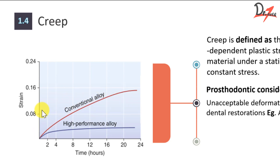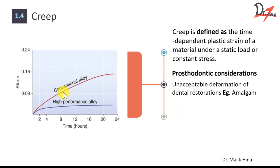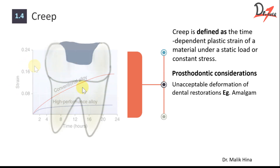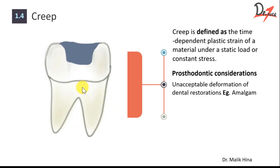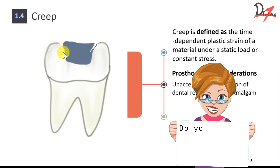Now the question is why does low copper have more creep? Because in low copper amalgam, we have tin which is 28%, and since its quantity is more, it can lead to the formation of gamma two-phase. Also, low copper amalgam has less copper, so obviously the creep reducing property will be less. That is why in low copper amalgam we have more creep. So what will happen in such cases? We will have marginal breakdown of the amalgam restoration, and it can lead to secondary decay.